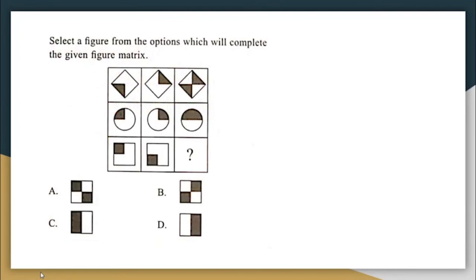Select a figure from the options which will complete the given figure matrix. In the third column, figures from the first and second columns are combined: two triangles are drawn together, two quarter-circles combine to form a half circle. Here in the third row, there is a square on top in the first figure and a square at the bottom in the second figure. So the answer figure should show both squares drawn together. The correct answer option is option C.